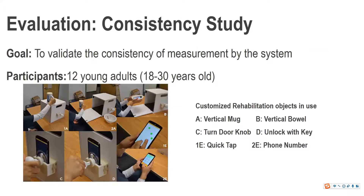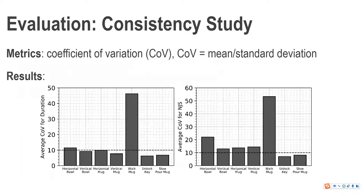The goal of the consistency study is to validate the consistency of measurements by the system. We enrolled 12 young adults and adopted the coefficient of variation (COV) as the metric. On average, most exercises show a COV percentage of around 10%, which is considered good enough for human-level motion analysis. The walk-with-mug exercise showed a considerably higher COV than other rehabilitation exercises, because related gait dynamics affect the smartphone accelerometer readings.